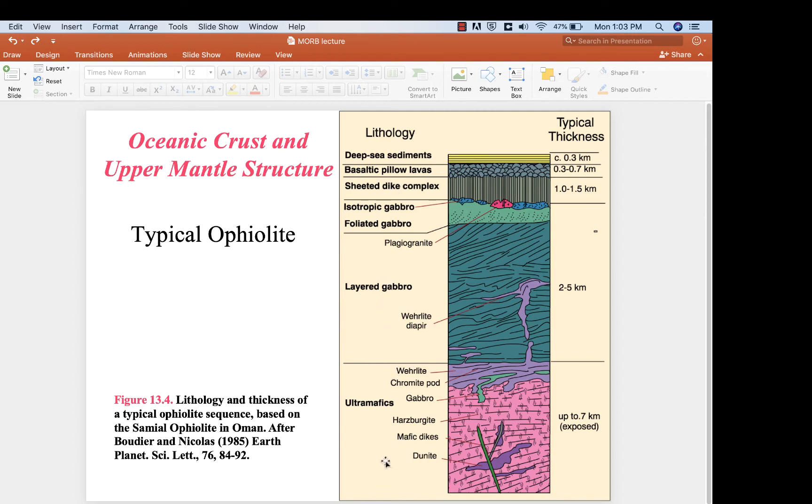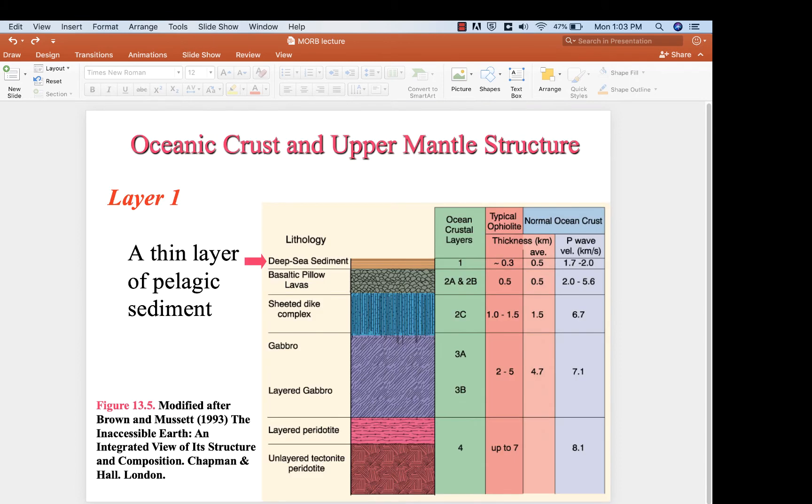Some very nice diagrams in your book relate these layers, the sediments, pillow lavas, et cetera, to what we see in the seismic velocities. The moho here, the boundary between the layered gabbros and the layered peridotites, there is a jump in P-wave velocity from about seven to eight kilometers per second. That's a pretty big jump. And so when we're looking at P-wave velocities, anything greater than eight kilometers per second usually indicates that we are looking at material in the mantle.